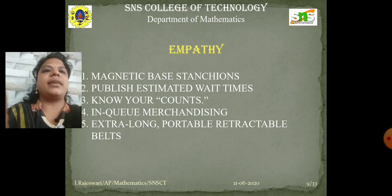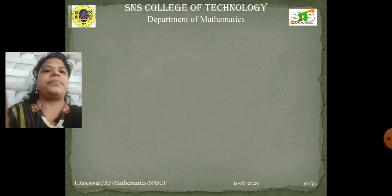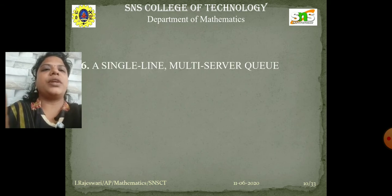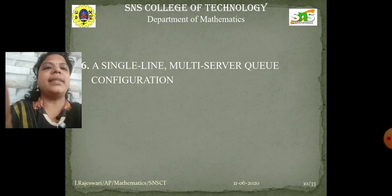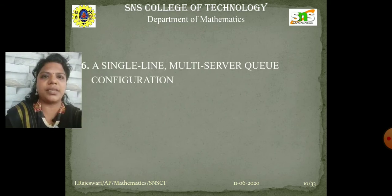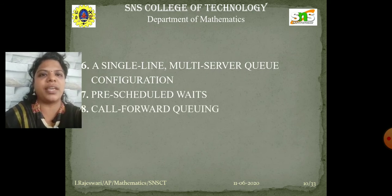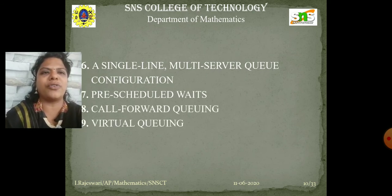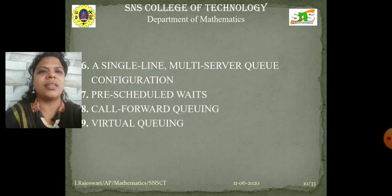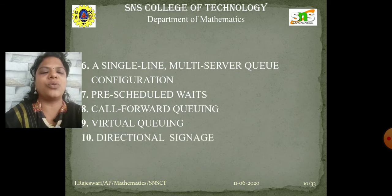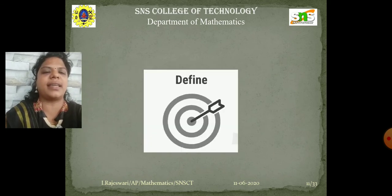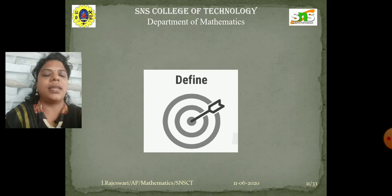The sixth one is a single-line multi-server queue configuration. The seventh one is pre-schedule waits. The eighth one is call-forward queuing. The ninth one is virtual queuing. The tenth one is directional signage.